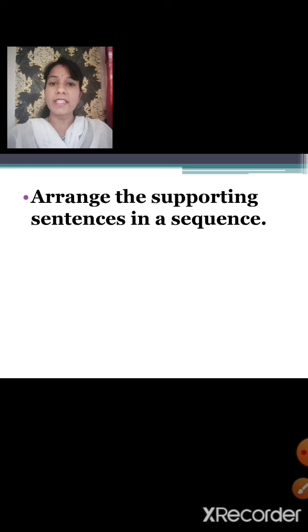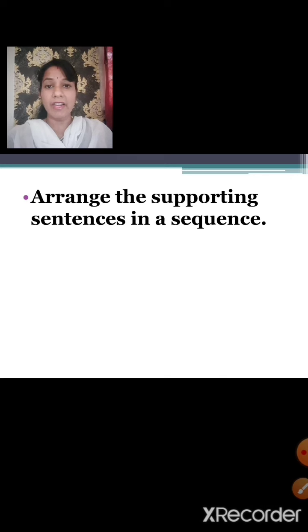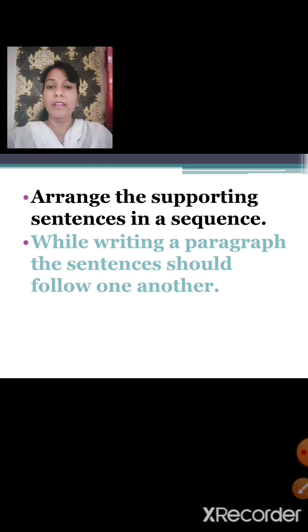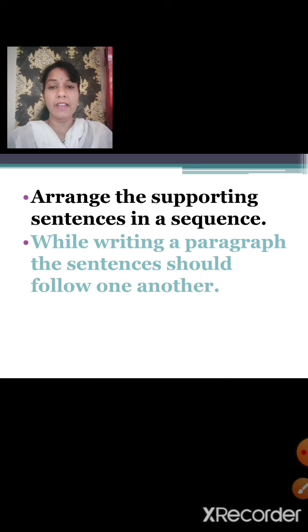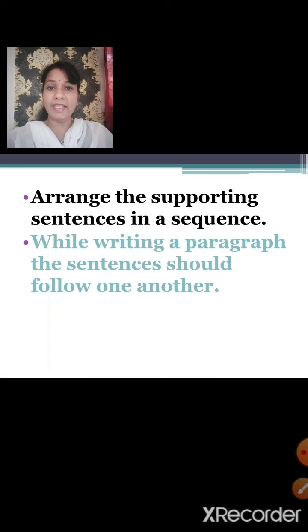Arrange the supporting sentences in a sequence. As I already told you, the supporting sentences should be arranged in order of their importance. Or if a paragraph is describing an event, then the sequence will be according to the actions that are happening. While writing a paragraph, the sentences should follow one another — you should not leave any lines or any space in between two sentences.